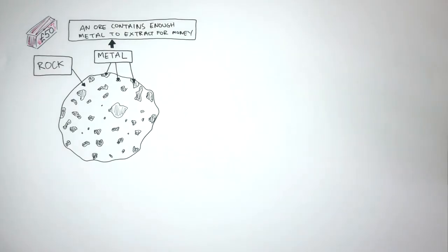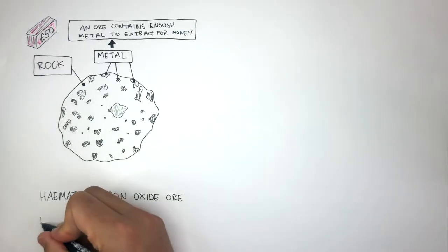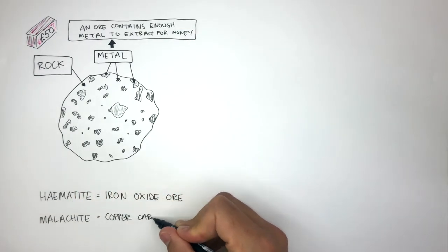Two examples of ores are hematite, which is an iron oxide ore, and malachite, which is a copper carbonate ore.